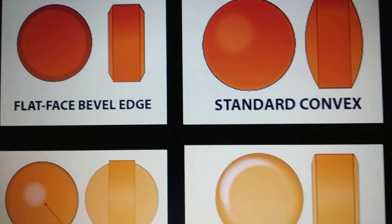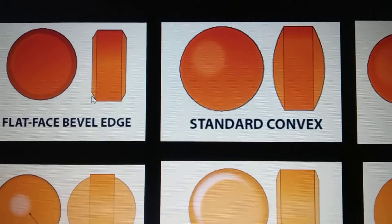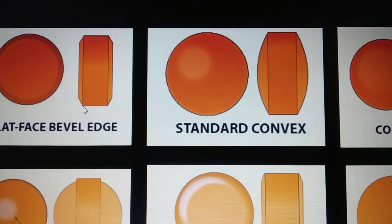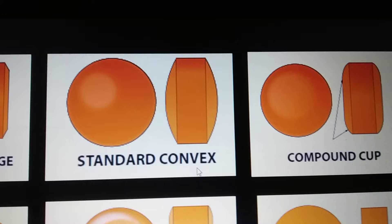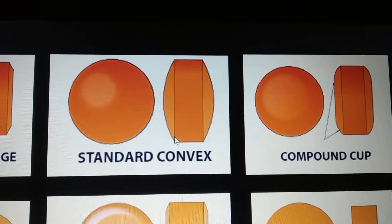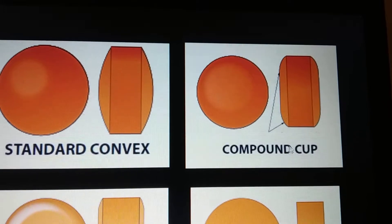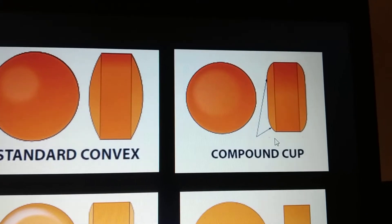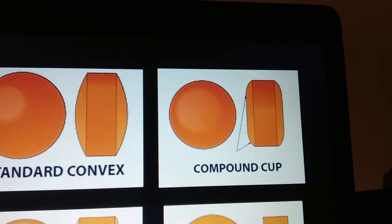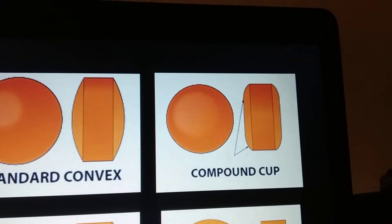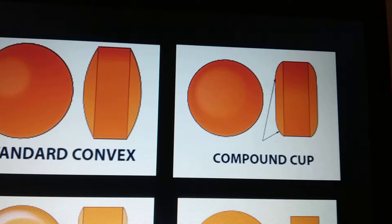The first one is the flat face bevel edge tablet. As you can see, the surface of the tablet is flat and the edges are beveled in nature. The next one is the standard convex tablet, where the tablet surface is in the form of a curvature. Next one is compound cup — again the tablet surface is flat in nature and it does not have sharp edges; instead it is in the form of a radius, that's why it is called compound cup.